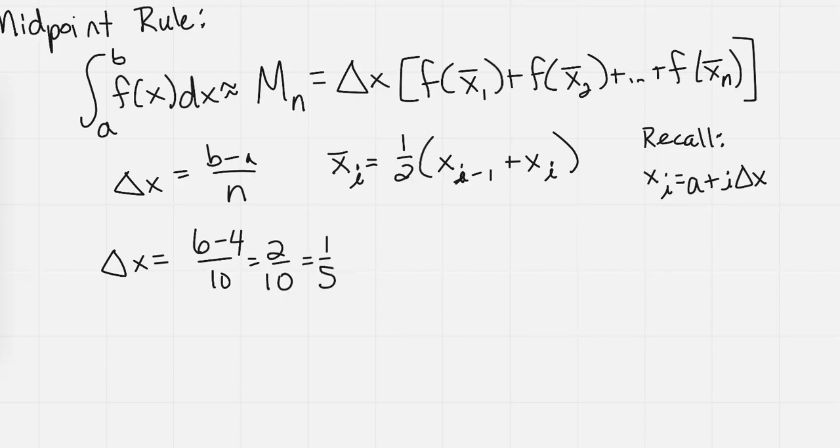Now this x bar sub i is our midpoint, and we've seen this back when we were doing area approximation when we first learned about integrals using the midpoint formula. So this should be somewhat familiar. But again, I want to focus on this sub notation and how to utilize it. I think the intuitive approach we get, but let's make sure we know how to use the formula and all of its notation because that kind of stuff comes up a lot.